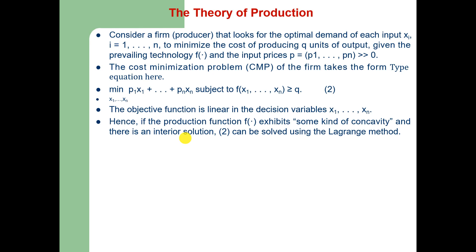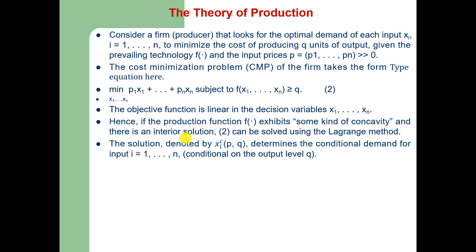You already know how to use the Lagrangian multiplier to optimize. In case of cost minimization, we minimize cost subject to the given level of output; in case of output maximization, we maximize output subject to the cost constraint. The solution is denoted by x_i^c, which is a function of price and output, and it determines the conditional demand for input i, which is conditional on the level of output q.